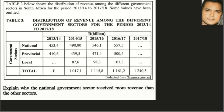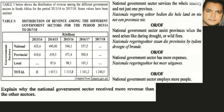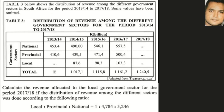The next question asks us to explain why the national government sector received more revenue than the other sectors. This is a general knowledge question. The national government services the entire country, whereas provinces focus only on their own province. The national government also has more expenses and assists various provinces in times of drought and wildfires. Any of these answers can be given.